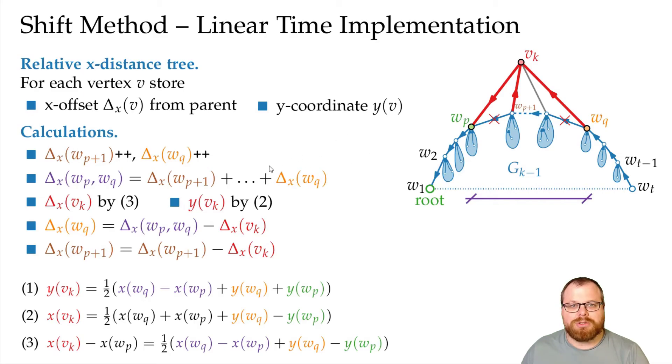However, how much time do we really need? We have to take the x distance of W_q and of all these vertices inside. But these are the covered vertices. Those we only have to look at exactly once, because now they disappear from the outer face. So here we only look at one plus the sum of vertices that are removed from the outer face in every step.